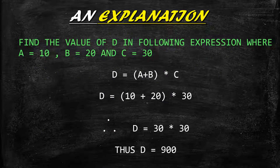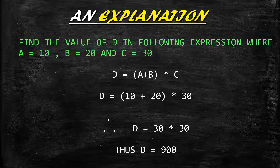Here is an example: find the value of d where a = 10, b = 20, and c = 30, given the expression d = (a + b) * c. Substituting the values: d = (10 + 20) * 30. Since a + b is within the bracket, it is added first, giving 30. Then 30 is multiplied by c which is 30, giving a final result of d = 900. This demonstrates order of precedence when an expression has more than one operator.